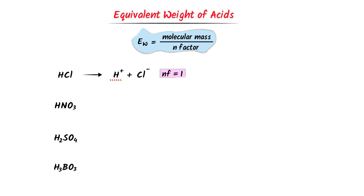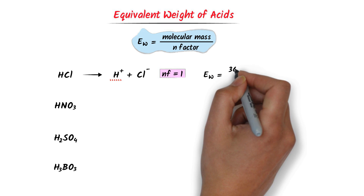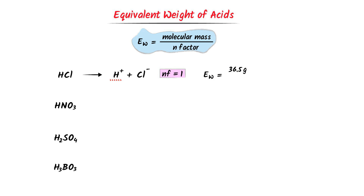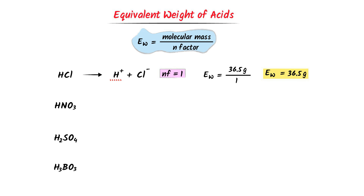Note its equivalent weight. We know that equivalent weight is equal to molecular weight upon N factor. The molecular weight of HCl is 36.5 gram and the N factor of HCl is 1. After calculation, I get 36.5 gram. So the equivalent weight of HCl is 36.5 gram.